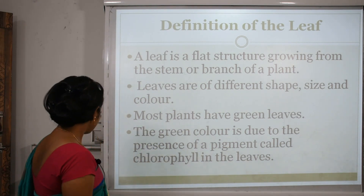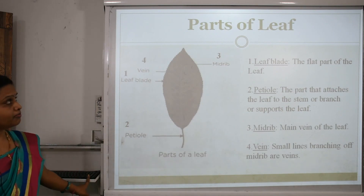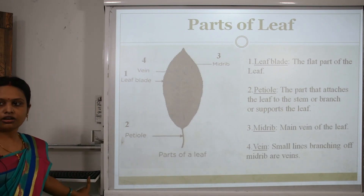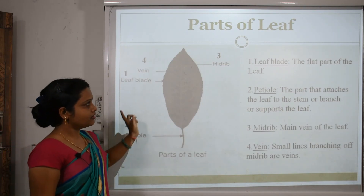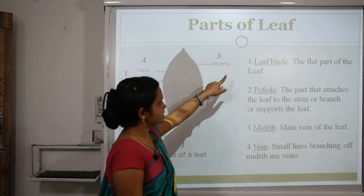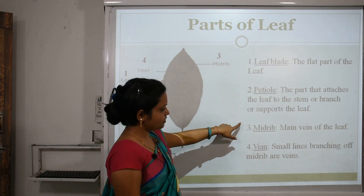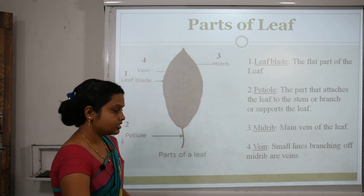The green color of leaves is due to the presence of a pigment called chlorophyll. Now, the parts of a leaf — there are four parts: leaf blade, petiole, midrib, and veins.